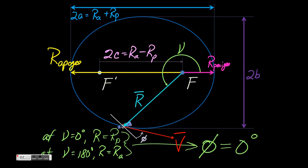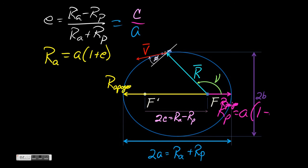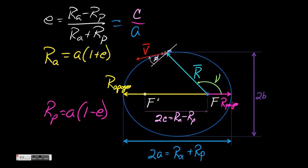Let's talk about eccentricity — the other constant in our solution to the two-body equation of motion. Eccentricity is a measure of how non-circular or elliptical our orbit is. Here's the equation for E in terms of the distances at perigee and apogee, or in terms of c and a. We can also use this definition in reverse to find our apogee and perigee given a satellite's semi-major axis A and its eccentricity E.